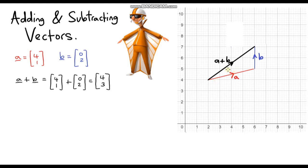If we take a look at what the horizontal and vertical components are, we are going 1, 2, 3, 4 to the right, which is this number here, and we're going up 1, 2, 3, which is our vertical component here.